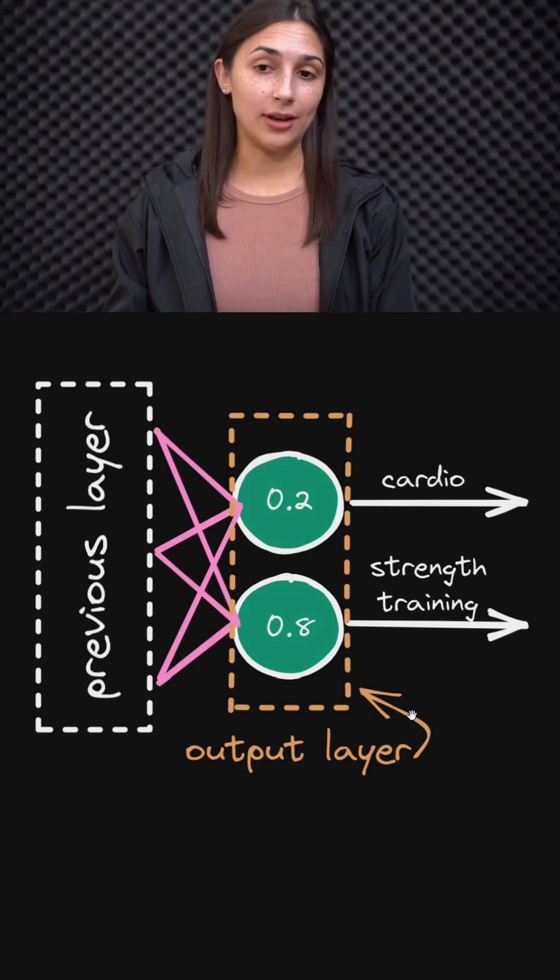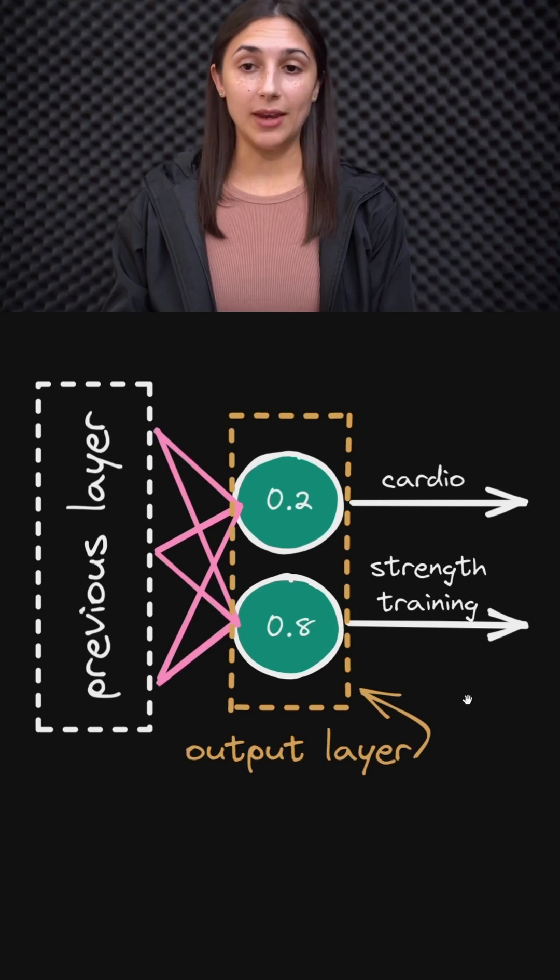And so therefore, the prediction for this classification task from the network is that this individual should focus on strength training with a higher probability.